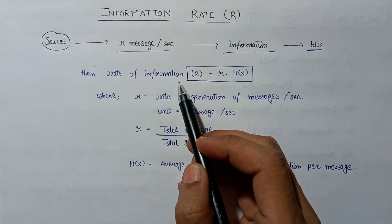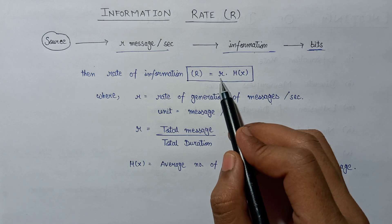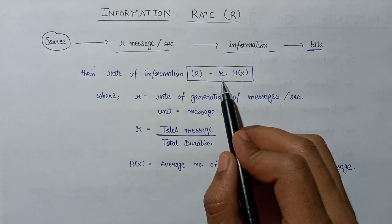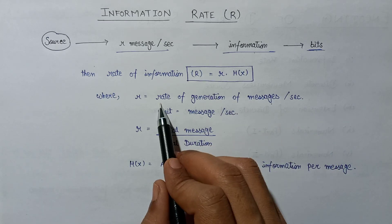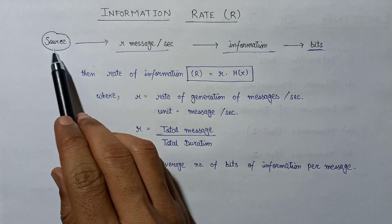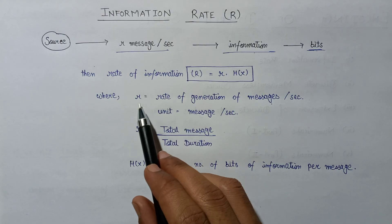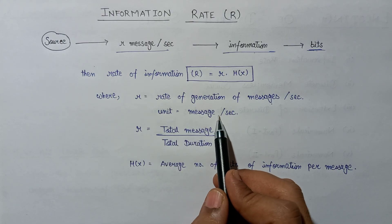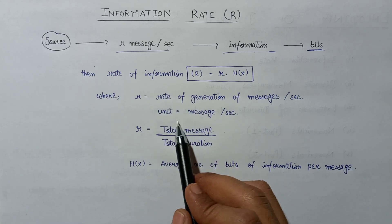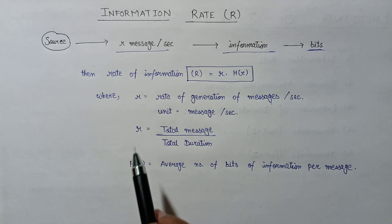If we talk about the rate of information, denoted by capital R, then the rate of information is given as small r multiplied by H(x). In this expression, small r represents the rate of generation of messages per second by the source, and the unit for small r is messages emitted by the source per second.